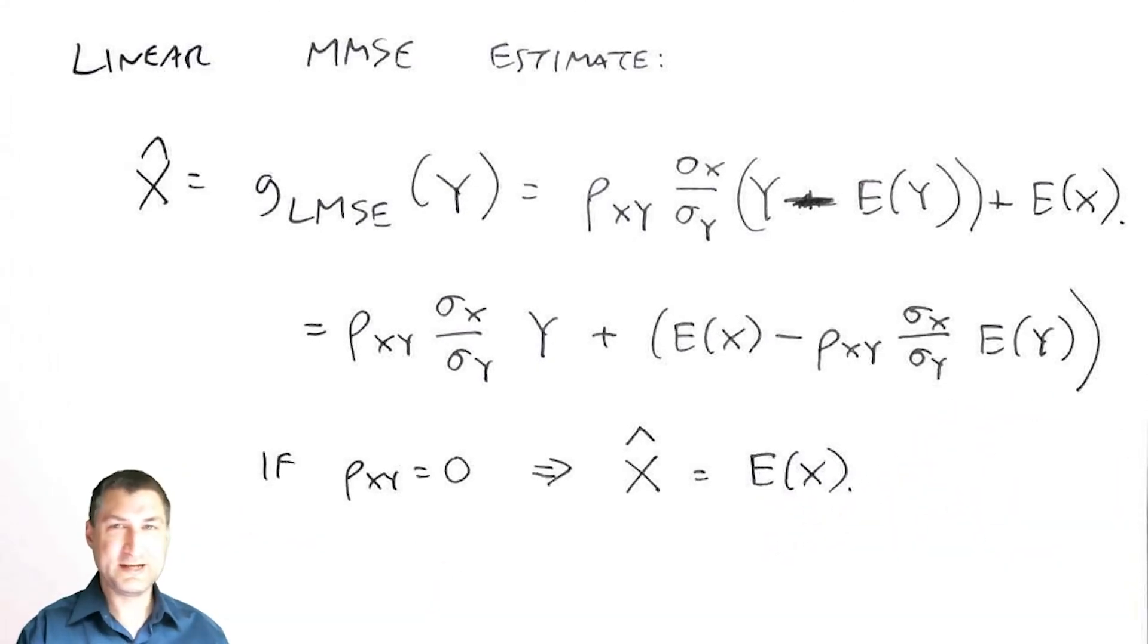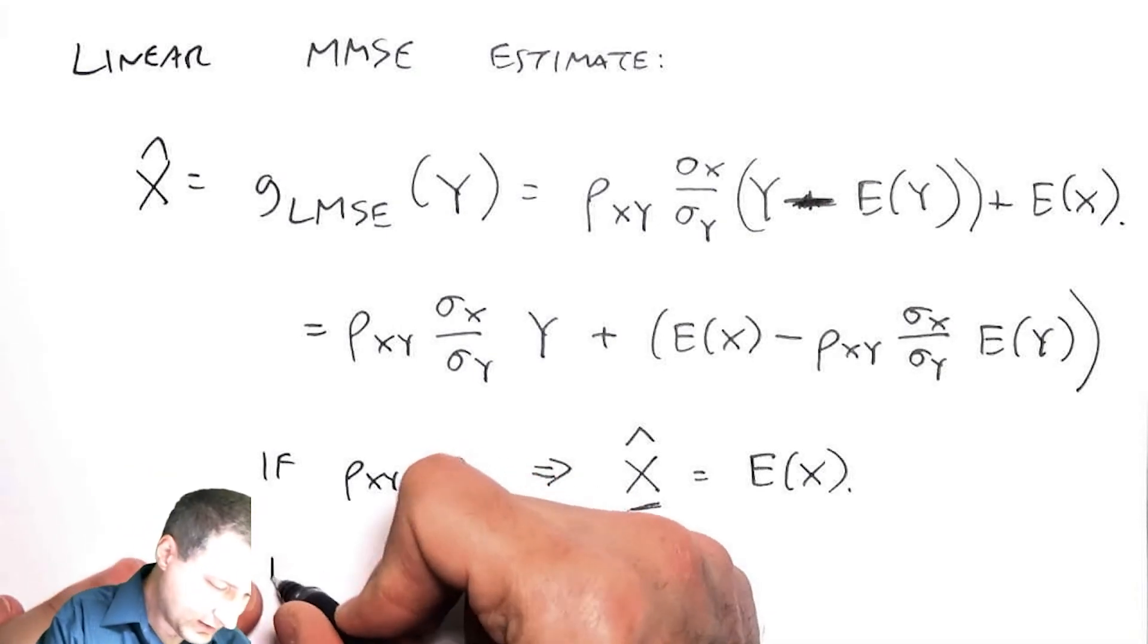That's like saying if X and Y are uncorrelated, then letting you know about Y doesn't tell me anything about X. That means the best guess that I can make about X is just its mean.